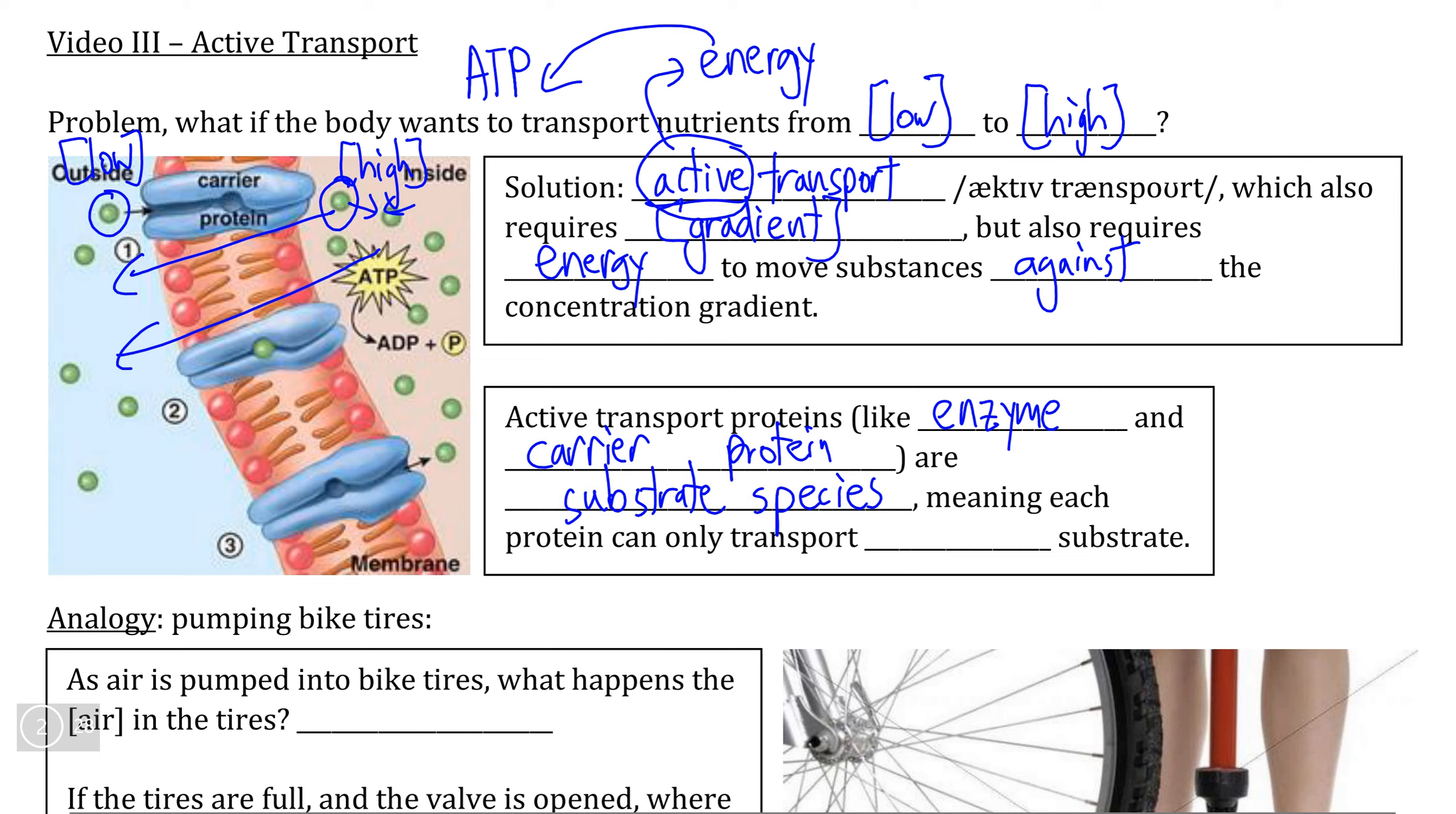That means that a specific substrate that we want to move from low concentration to high concentration can only go through a specific active transport carrier protein. One example of these are ion pumps or ion carrier proteins. For example, if we wanted to move sodium ions from low concentration and pump them into an area of high concentration, these sodium ions would have to fit into the active site of a carrier protein, and then the conformational change of that carrier protein would move the sodium ion into the cell.